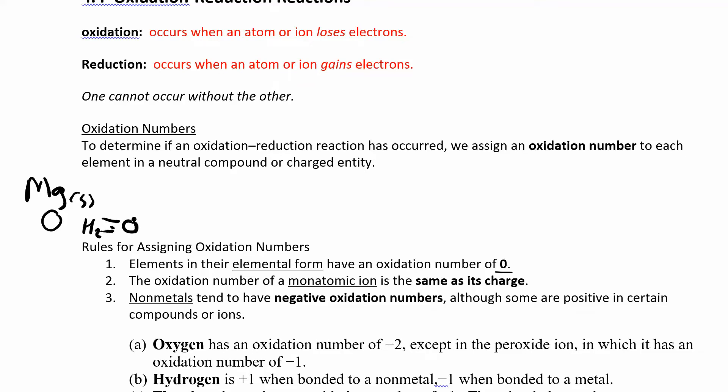If you have an ion, then the oxidation number is the same as the charge on the ion. So if I had something like magnesium ion, it would have a plus two oxidation number.